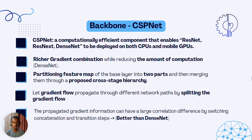CSPNet allows richer gradient combination while reducing the amount of computation. It reduces computation while allowing gradients computed during learning to propagate more thoroughly and be combined. This is achieved by partitioning the feature map of the base layer into two parts and merging them through a proposed cross-stage hierarchy. We will look at this in detail on the next slide.